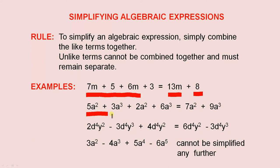Similarly, in this expression here, you can add 5a squared to 2a squared. That gives you 7a squared. You can add 3a cubed to 6a cubed. That gives you 9a cubed.